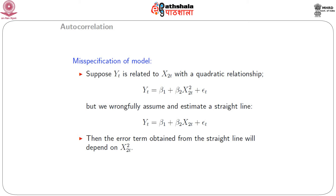The second cause of autocorrelation is a misspecified model. Suppose y_t is related to x_{2t} with a quadratic relationship: y_t = beta_0 + beta_1 * x_{2t}^2 + epsilon_t. But we wrongfully assume and estimate a straight line: y_t = beta_0 + beta_1 * x_{2t} + epsilon_t. Then the error term from the straight-line model will be influenced by x_{2t}^2, and this will introduce autocorrelation.